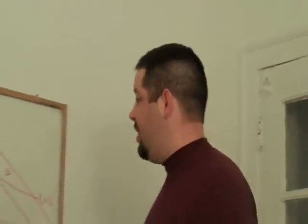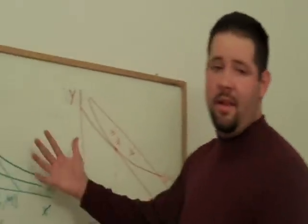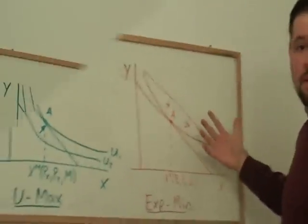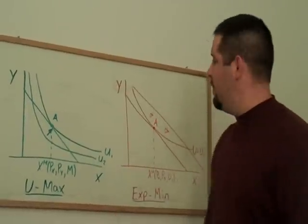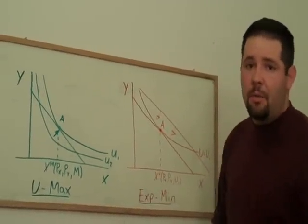In this video, I explain one of the more important results in consumer behavior, and that is the relationship between Marshallian and Hicksian demand. The Marshallian demand curve comes from the utility maximization problem.